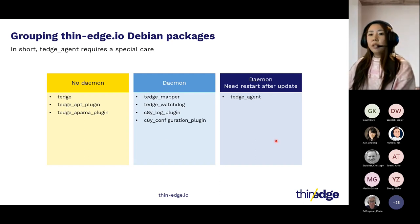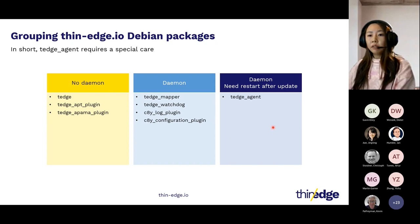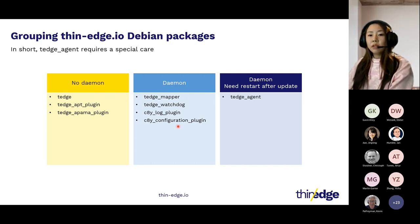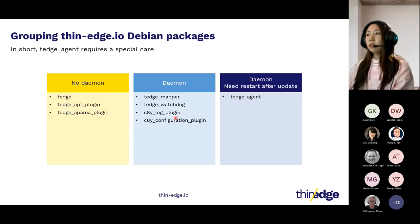On the contrary, updating daemon packages may be a little tricky, because during the update a restart of the daemon process is required to apply the binary of the newer version. However, aside from the Thin Edge agent, the other daemon packages can be updated in just one step, the same as non-daemon packages. So I'm going to show you the second demo — how to update TedMapper as a demo package via Cumulocity IoT.